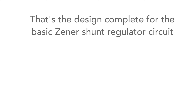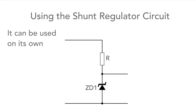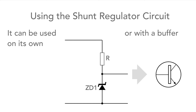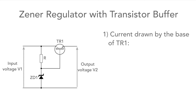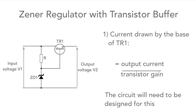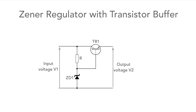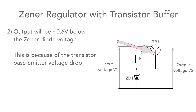So that's the basic calculation required for the simple Zener diode shunt regulator. Now let's look at some circuits that use this basic block. It can be used on its own, or the output capability is often increased by using it to control a transistor emitter follower or similar FET circuit. When doing this, the current drawn by the base of the driver transistor will be the output current divided by the transistor current gain, so the resistor value will need to be configured accordingly. Also, the output voltage will be about 0.6 volts lower than the Zener regulated voltage because of the base-emitter voltage drop.